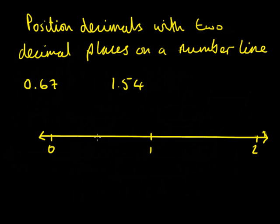0.67, let's look at that first. We're halfway between 0 and 1 at 0.5. We know that 0.67, 0 units, 6 tenths and 7 hundredths. Let's quickly put units, tenths, hundredths over our other number.